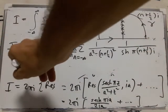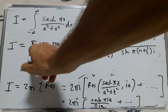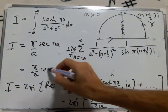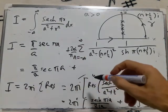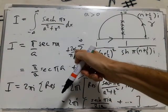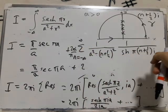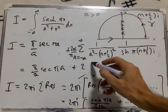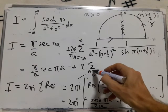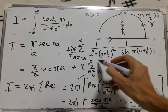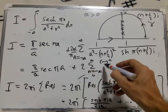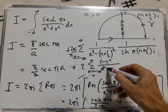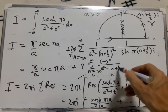So my final answer is π over a sec πa plus, the πs cancel, the i cancels with the i when I turn it into sine, so I just get the sum from n equals minus infinity to infinity of minus to the n over a squared minus n plus a half squared.